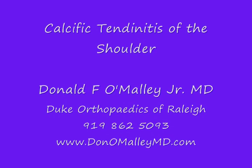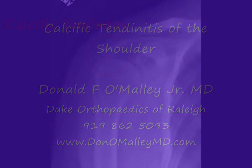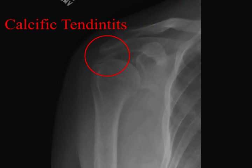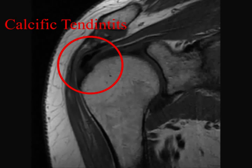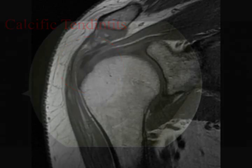Welcome to this educational video of a shoulder arthroscopy with debridement of calcific tendonitis. This patient's right shoulder had severe pain with all motion that had been present for many months. The right shoulder was x-rayed and showed a very large deposit of calcific tendonitis visible in the supraspinatus tendon of the rotator cuff. An MRI was done to evaluate the integrity of the cuff tendons as well as to help localize the deposit.